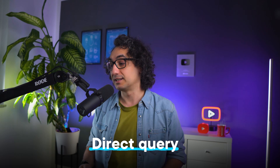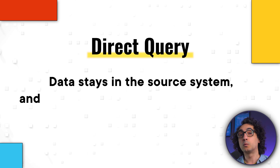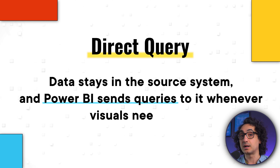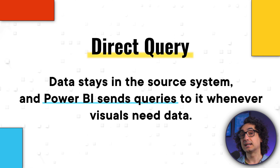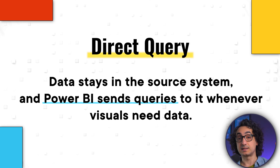Now we can talk about the second type of connection: Direct Query. The question is, what is Direct Query? If you use it, Power BI will not store an extra copy of the data inside it. Instead, the data stays in the source system, and each time the visuals in Power BI need data, it has to send a query to the source system.